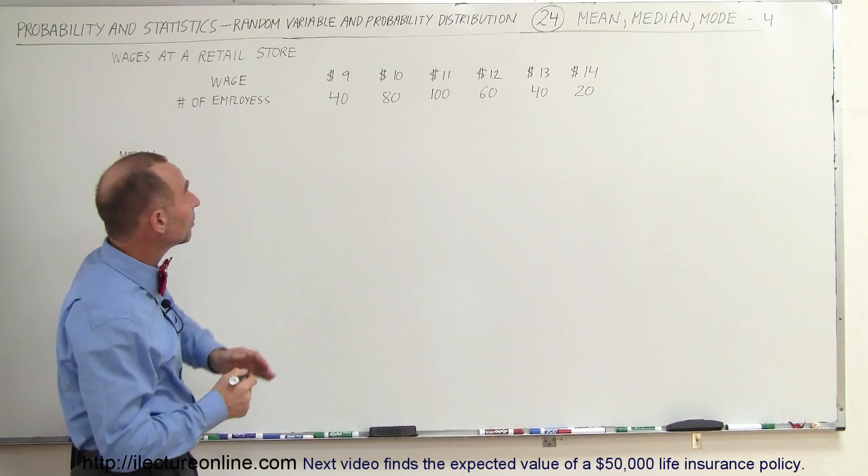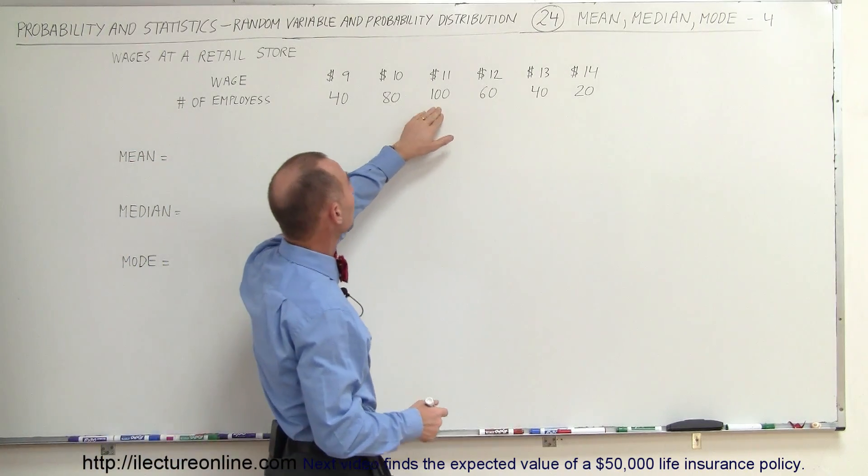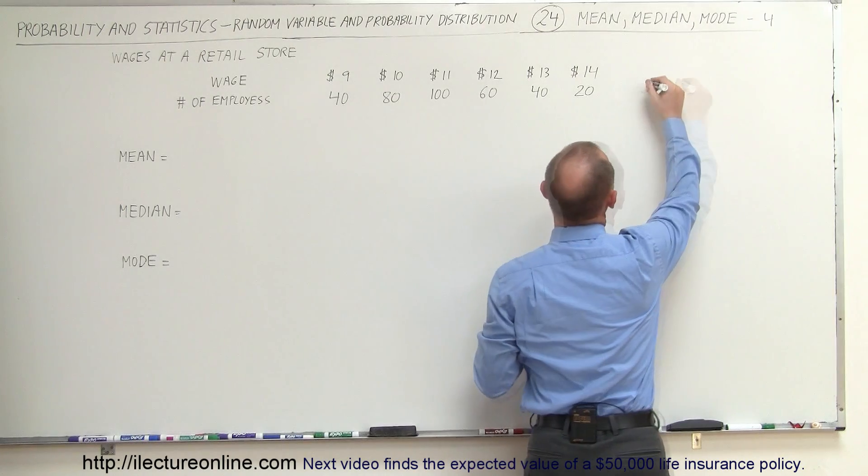So how many employees are there altogether? Well, 40 plus 80 is 120, 220, 280, 320, 340 employees.